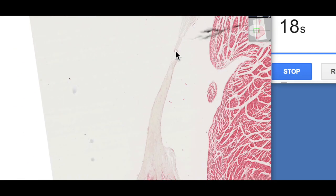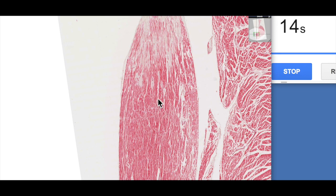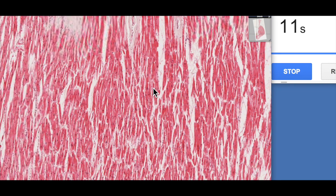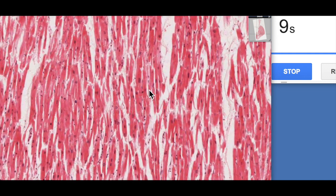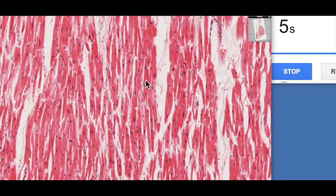Here we can actually see one of the attachments of the chordae tendinae, and then it ends in this papillary muscle, which is of course made up of cardiac muscle tissue. So these are the cardiomyocytes. You can see the nice branching, very typical of cardiac muscle cells with centrally located nuclei.